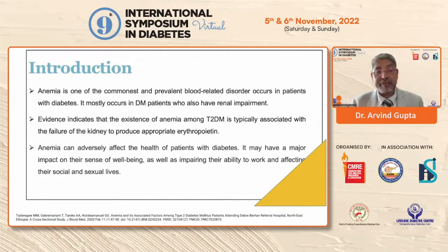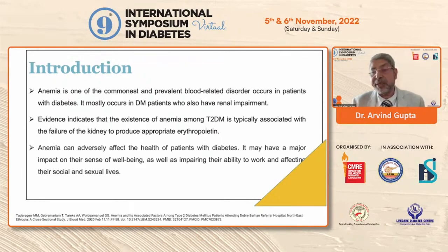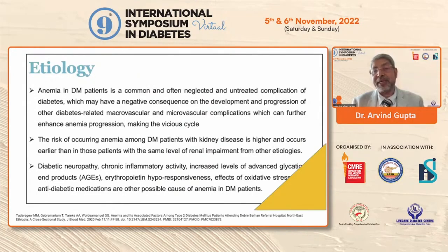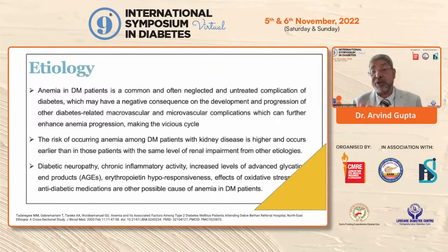We know that anemia can adversely affect the health of the patient. The quality of life actually suffers when the patient is suffering from anemia. It has a major impact on the sense of well-being, impairing their ability to work and affecting their social and sexual lives. It is a common and often neglected, mostly untreated complication of diabetes which may have a negative consequence on the development and progression of micro and macrovascular complications.